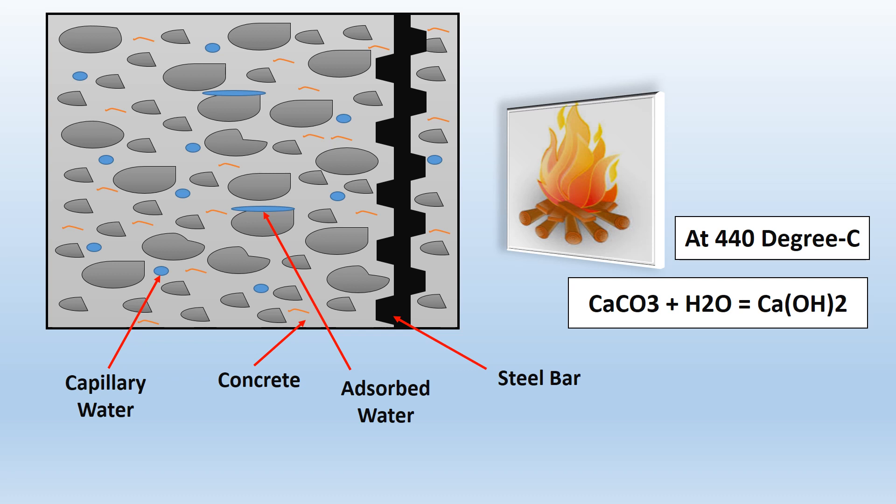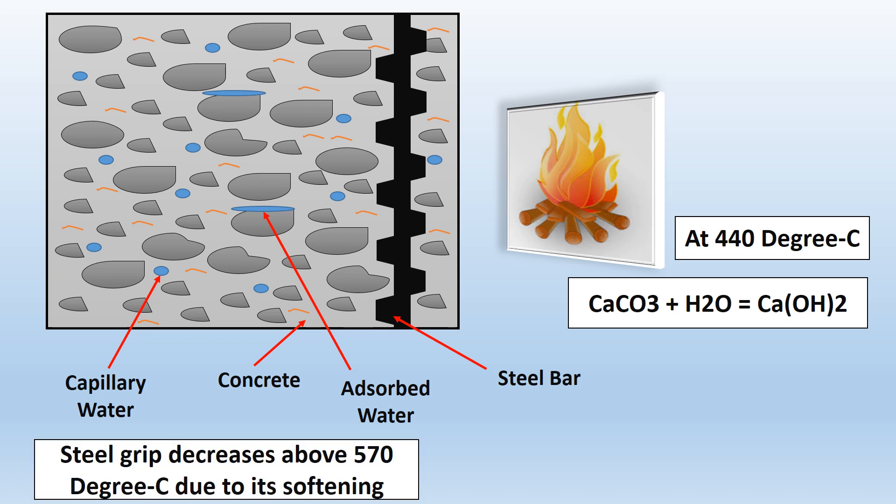The aggregate interlock and the shear resistance is lost and thereby the final ability to have a stronger bond with concrete for steel is also lost. The steel grip is finally lost on concrete at higher temperatures due to softening of steel and loss in its stiffness.